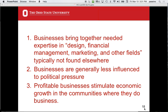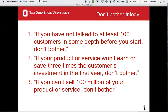They present the 'don't bother trilogy': if you're not talking to at least 100 customers in depth, don't bother. If your product or service won't earn or save three times the customer's investment in the first year, don't bother — sell products where poor people get a return on their investment. And if you can't sell 100 million of your product or service, don't bother. That'll throw out a lot.